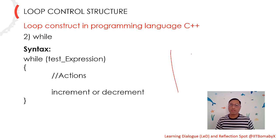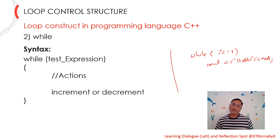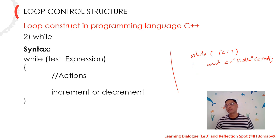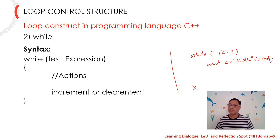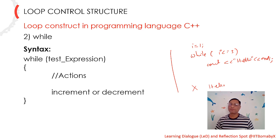Let me take one example. What is the output of this code snippet? While i less than equal to 3, cout hello and endl. The same rule is also applicable here: if the loop control structure has only one statement, then curly braces can be ignored. Can you tell me what is the output? Somebody says hello is going to print three times. Not exactly, because the value of i is not known to you. If we assume the value of i equals 1, then yes — hello is going to print three times: hello, hello, and hello.